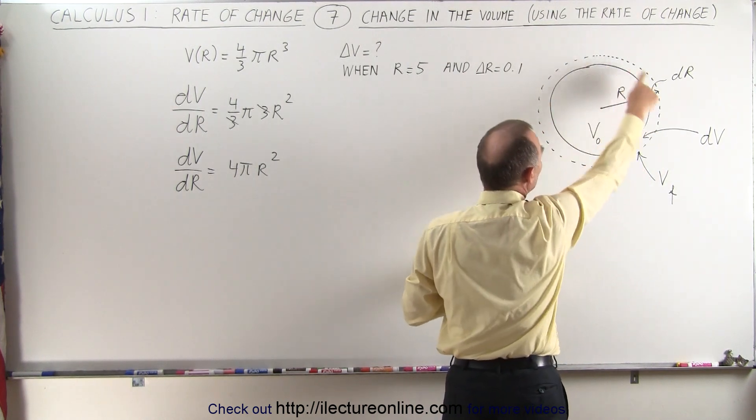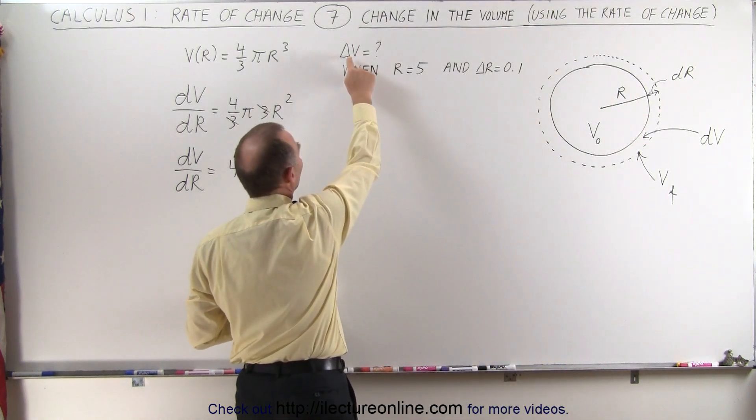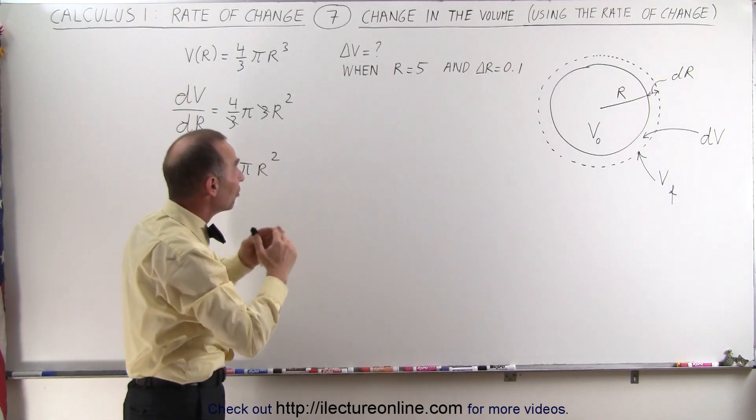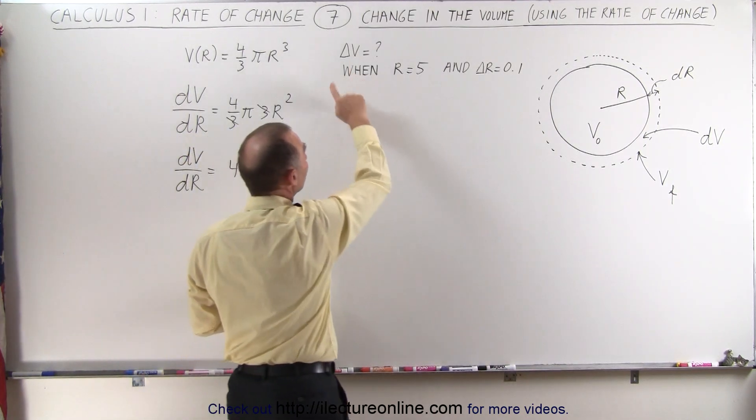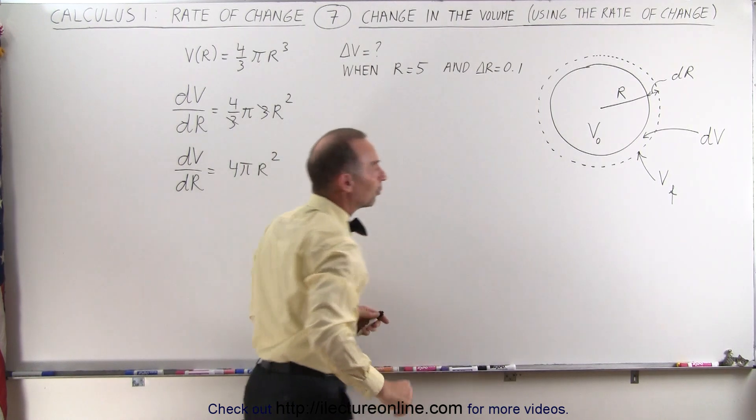And then the volume is going to change by a small amount dV, and so now we have the new volume here instead of the original volume. So what we want to do is we want to know how much the volume changed, and this triangle symbol means the change in the volume, how big is that change in the volume when the radius is 5, and the change in the radius is 0.1.